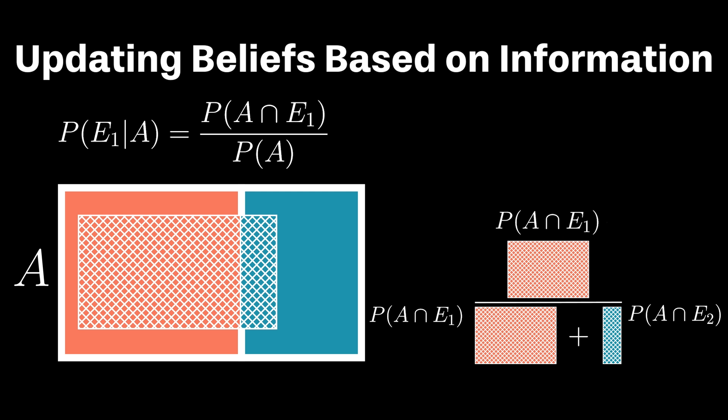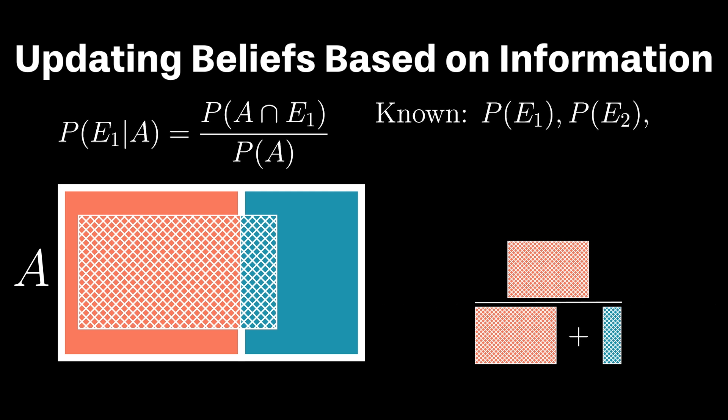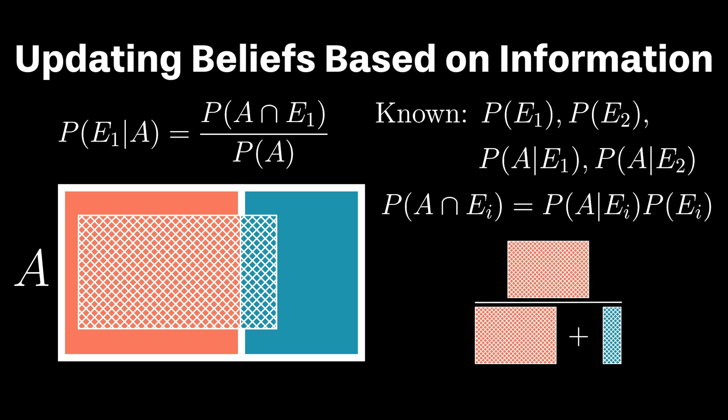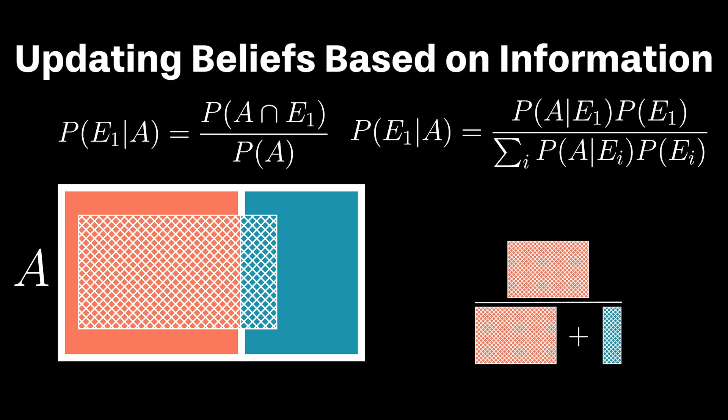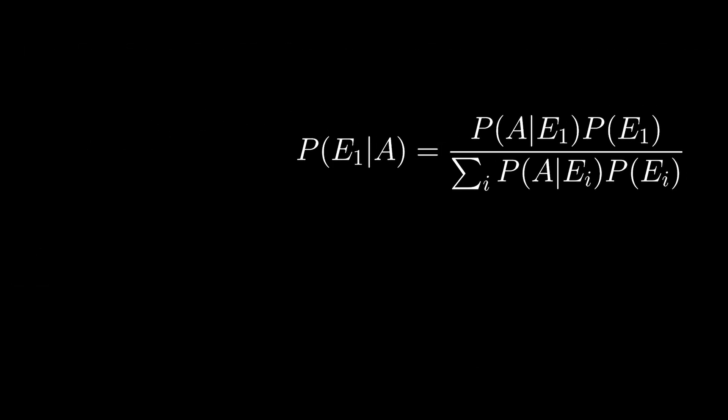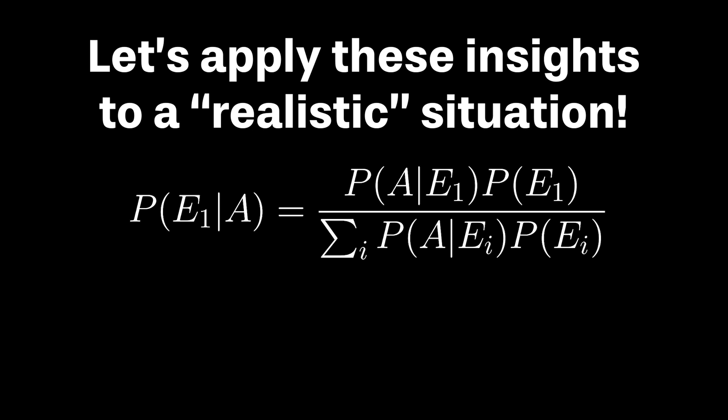We now know how to determine our conditional probability, but let's think about what pieces of information we may know. We can, for example, survey past customers to quickly estimate the chance a given shipment is good or bad. We may also reach out to the manufacturer of the testing equipment to understand the chance of a false positive or false negative reading. In deriving Bayes' theorem, we showed that the joint occurrence of two events, say A and E1, is simply the product of our conditional probability of A given E1, multiplied by the probability of event E1. Based on all of this, we can determine the conditional probability of a good product given the test result via Bayes' theorem.